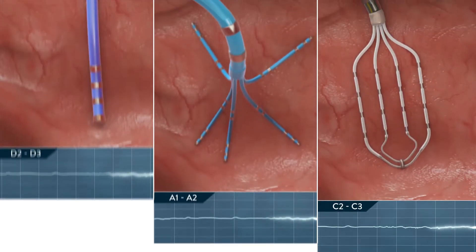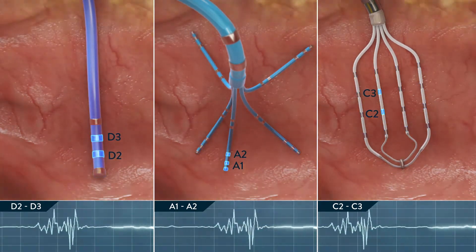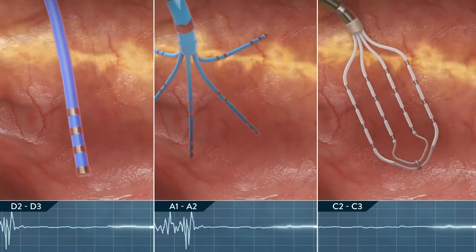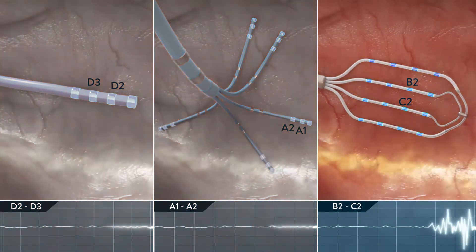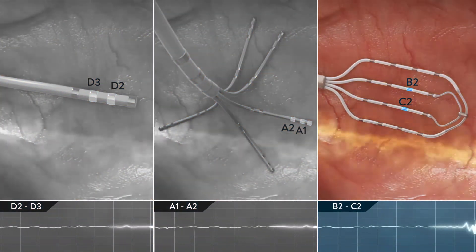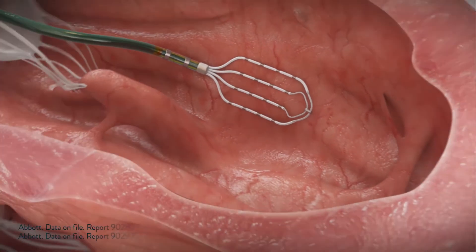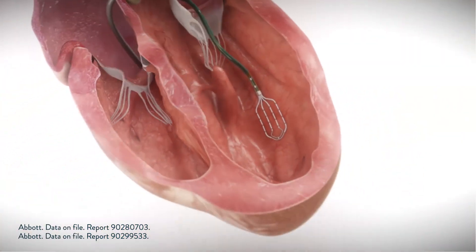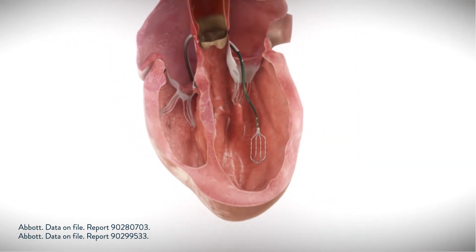Unlike traditional mapping catheters and branched spline catheters, the Advisor HD Grid Mapping Catheter, Sensor Enabled, gives you reliable results. The grid provides the coverage of a single or double loop catheter, with predictable navigation and consistency compared to a branch catheter.